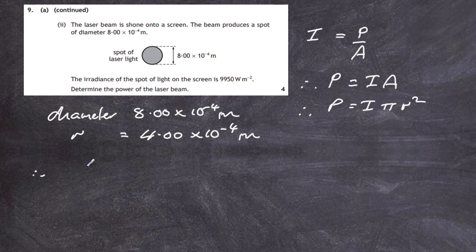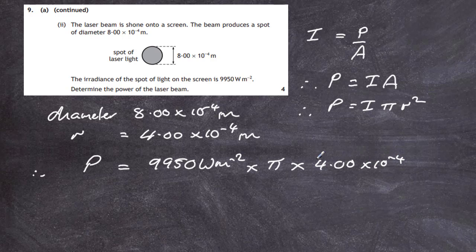Therefore, plug the numbers in. The power equals the irradiance which we are told is 9950 watts per meter squared, multiplied by the area which is pi times the radius squared, which is 4.00 times 10 to minus 4 all squared. That gives you a meter squared. The two meter squared cancel out to give you power in watts. Doing that on the calculator, we end up with 5.00 times 10 to minus 3 of a watt, which we can convert into milliwatts as 5 milliwatts.